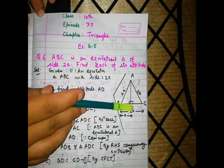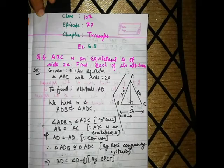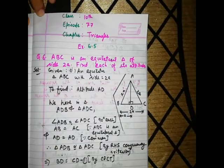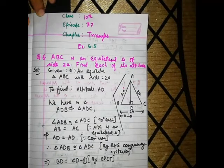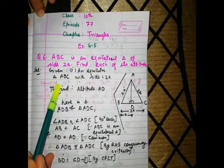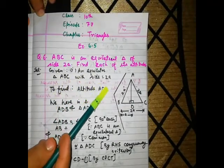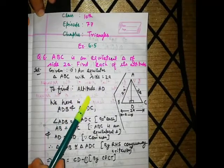We will find altitude AD. If we can find AD, then all 3 altitudes will be equal to the length of AD. Given: equilateral triangle ABC with side equal to 2a, and we have to find altitude AD.